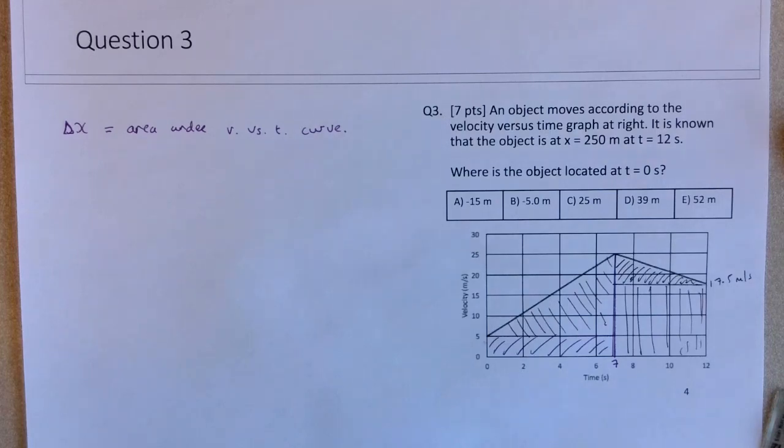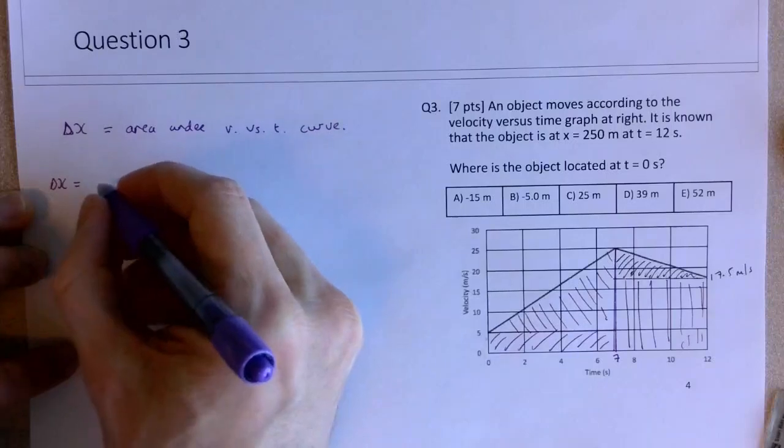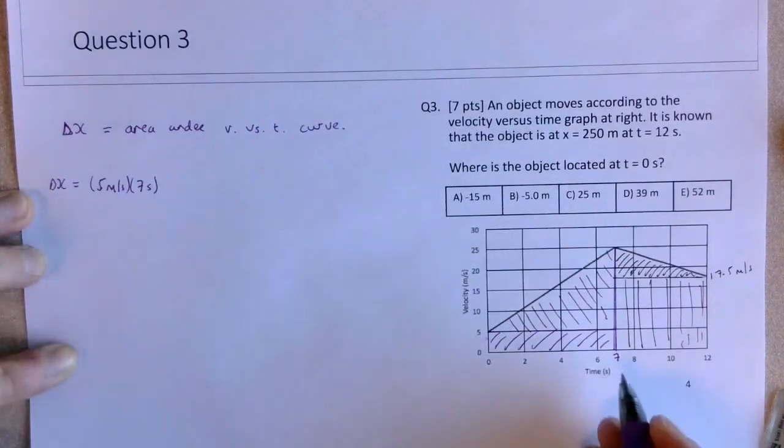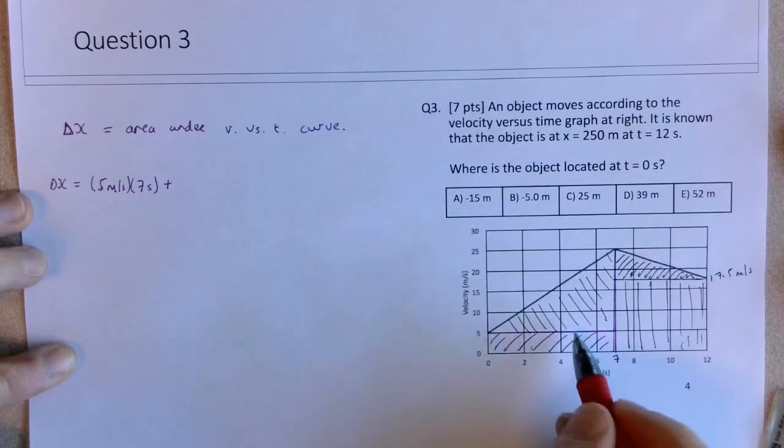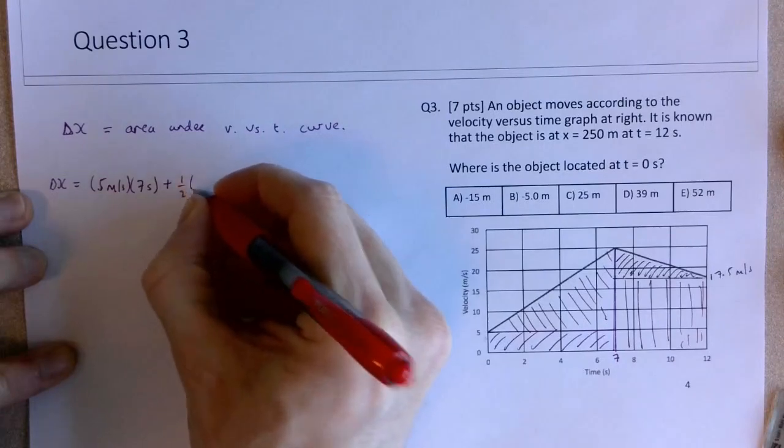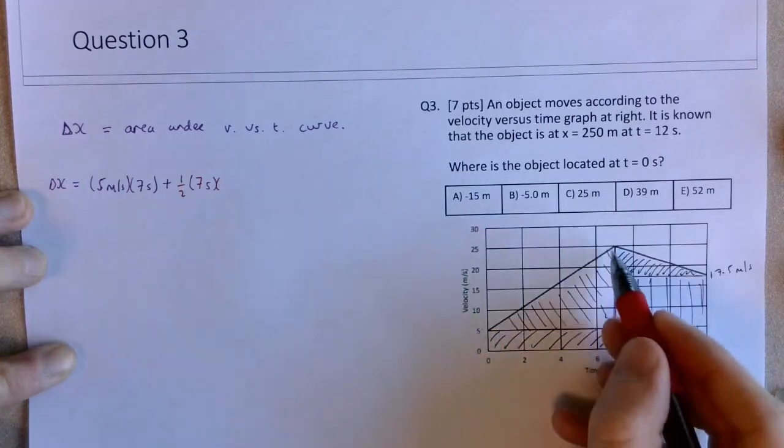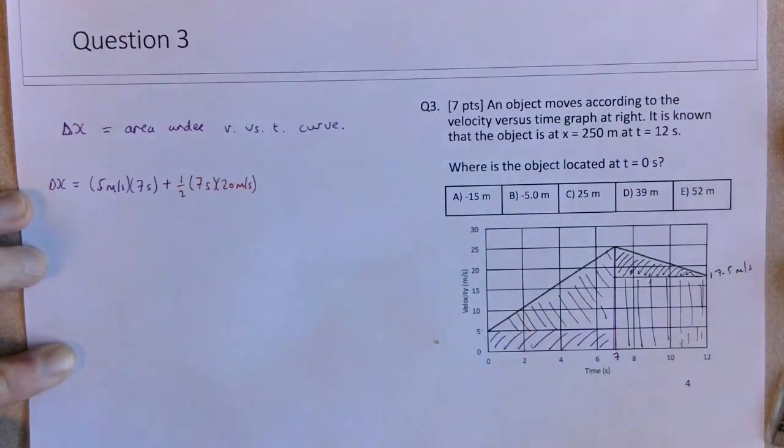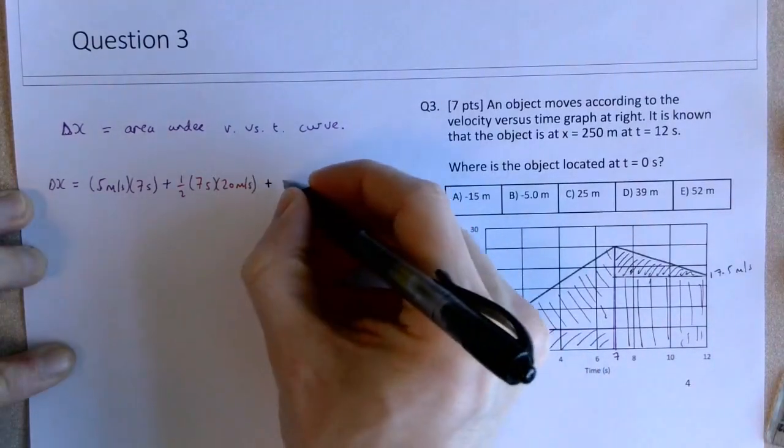So I'm going to first determine the delta x between 0 and 12 seconds. I'll start with this rectangle down here. We've got a height of 5 meters per second for 7 seconds. I'll match the colors to the shading here. Then I've got the area of a rectangle - half the base. Base is 7 seconds, and the height is from 5 to 25, so that's a height of 20 meters per second. So that's the area of the red triangle here, half the base times the height. Plus, again, another rectangle.